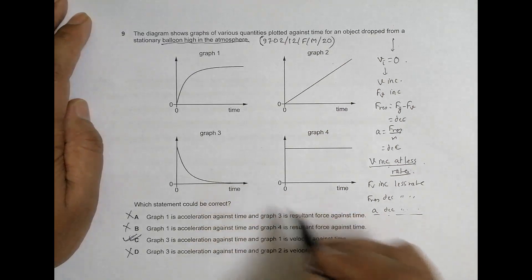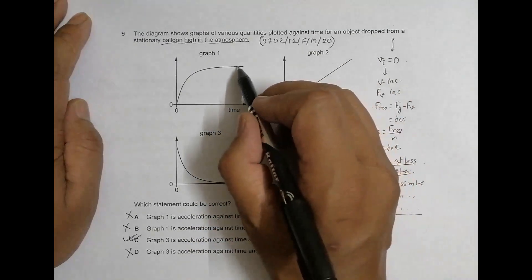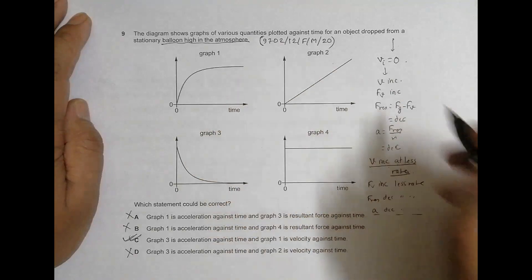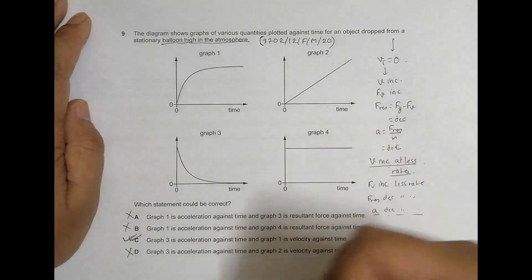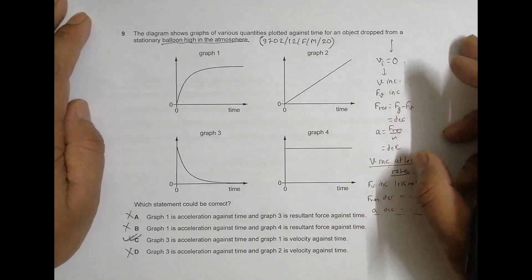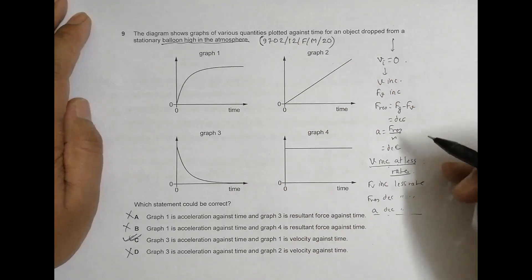And ultimately what happens is a becomes 0 and also ultimately v becomes uniform. And I have covered this thing a lot in previous questions, as well as I have given a lecture also on YouTube regarding the variation of velocity, acceleration, and displacement for bodies falling freely under gravity.